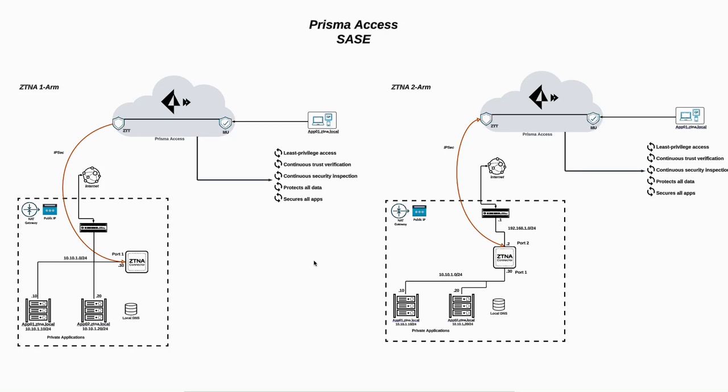Hi everyone, this is Dario from Palo Alto. Today we're going to talk about how to deploy step-by-step ZTNA — Zero Trust Network Access — Connector from Prisma Access SASE to Microsoft Azure. The same mode you can deploy in AWS, GCP, and any public or private cloud.